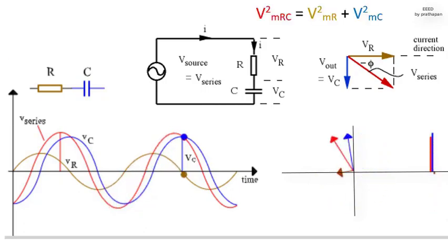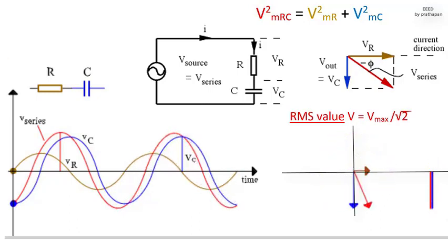From Pythagoras theorem, V2MRC equals V2MR plus V2MC. If we divide this equation by 2I2, and remembering that the RMS value V equals Vm slash square root 2, we also get this. Now this looks like Ohm's law again. V is proportional to I. Their ratio is the series impedance Z.